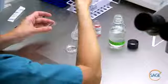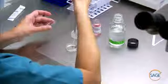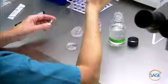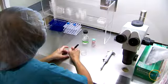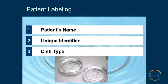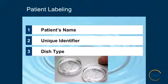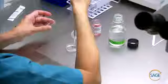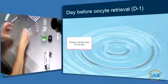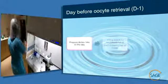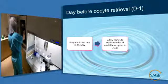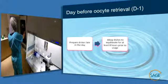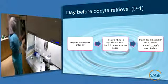Each patient should have their dishes prepared individually. No more than two culture dishes should be prepared at one time to avoid evaporation of the media. All culture dishes should be labeled with the patient's name, unique identifier, and dish type. When making drops of medium, use a single wrapped pipette tip, rinsing the tip twice with culture medium before making the droplets. The day before oocyte retrieval, commonly referred to as day minus one, dishes should be prepared late in the day and allowed to equilibrate for at least eight hours prior to usage on day zero, in an incubator set to attain the manufacturer's specified pH.